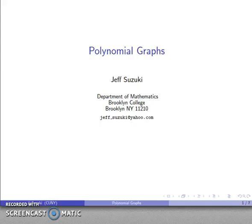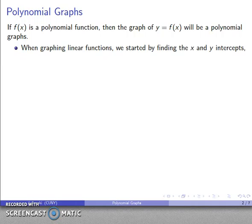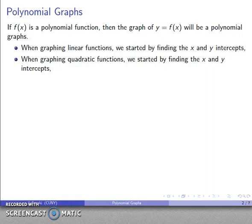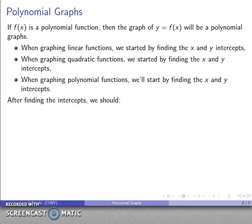Another important type are polynomial graphs — the graph of a polynomial function. To understand how to graph a polynomial function, we look at what we already know. When we graphed linear functions, we started by finding the x and y intercepts. When we graphed quadratic functions, we started by finding the x and y intercepts. So when we graph polynomial functions, we'll start by finding the x and y intercepts as well.